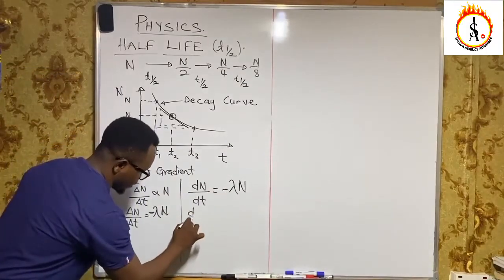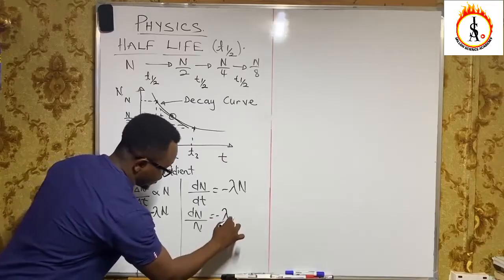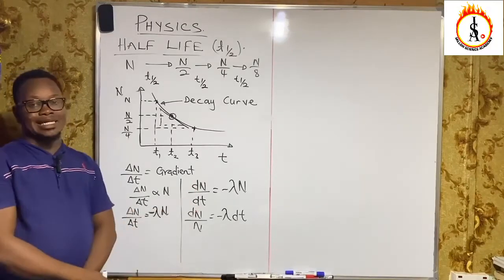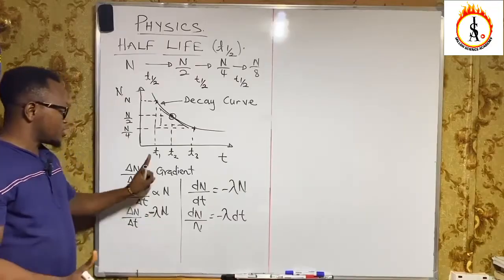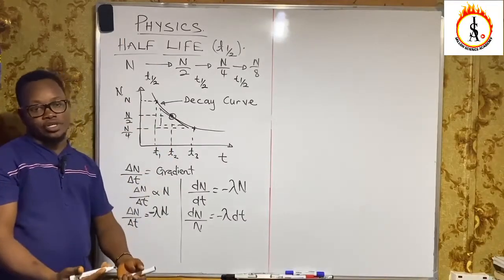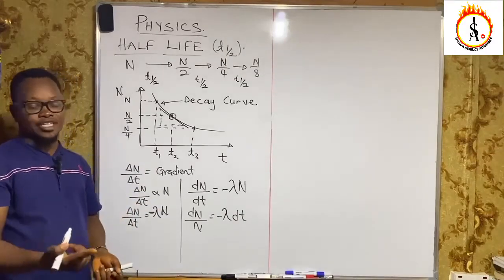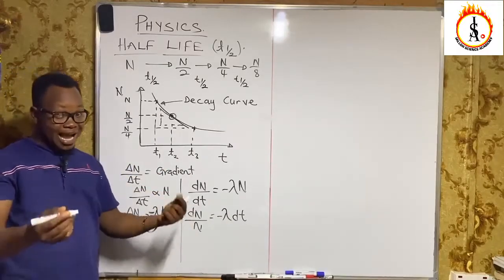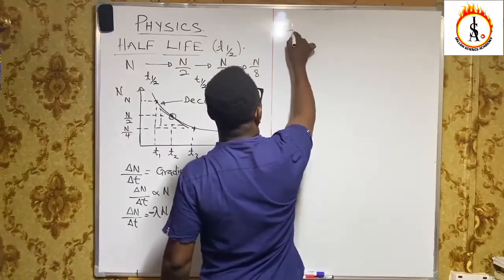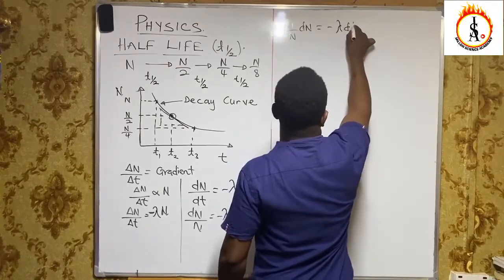We can rearrange this and change these notations. We see dn over dt is equal to negative lambda N. With this, we can rearrange and say dn over n — meaning we bring the N down and bring dt up — is equal to negative lambda dt. Because we've seen the delta notation, that tells us it is differentiation. For us to get back to the original equation, we have to undo the differentiation. To undo differentiation, we integrate, because integration is anti-differentiation. So this can be written as 1 over N dn is equal to negative lambda dt.